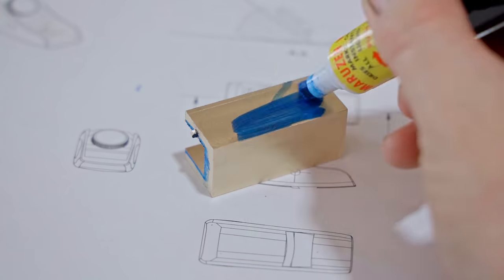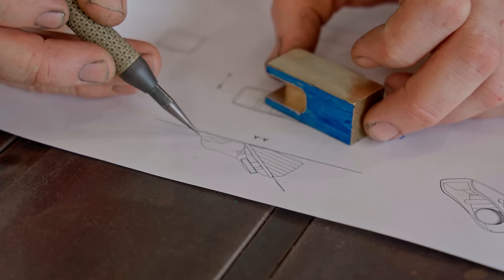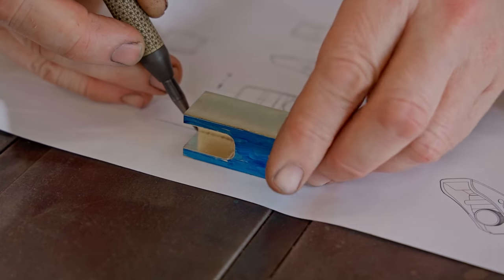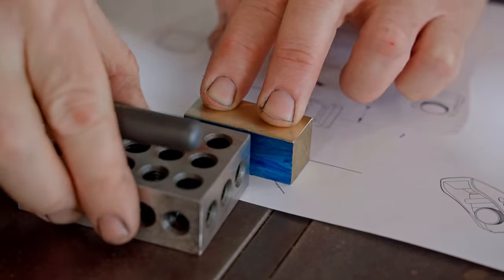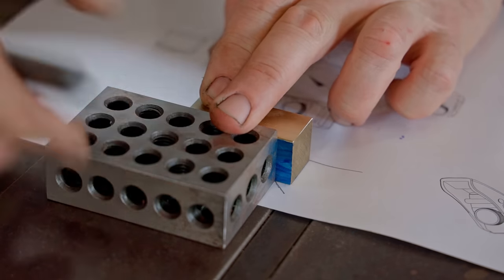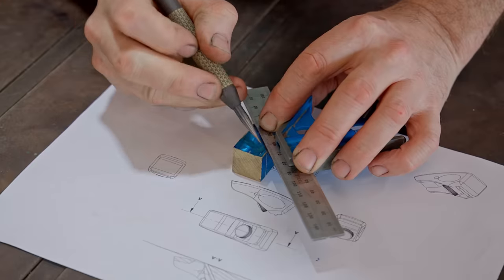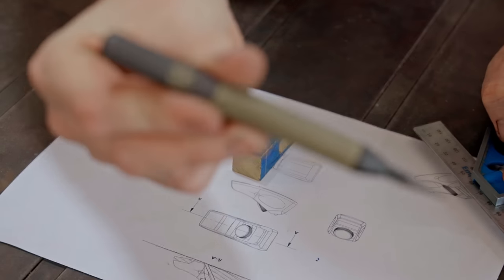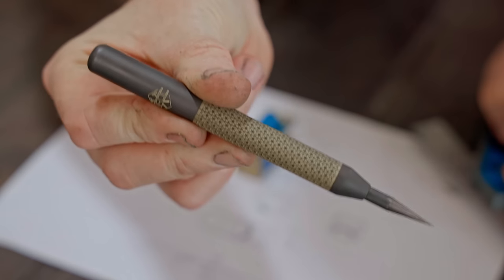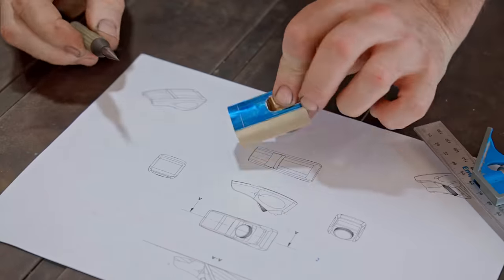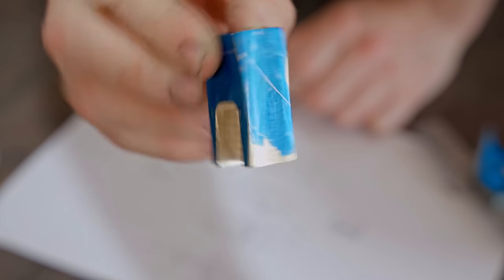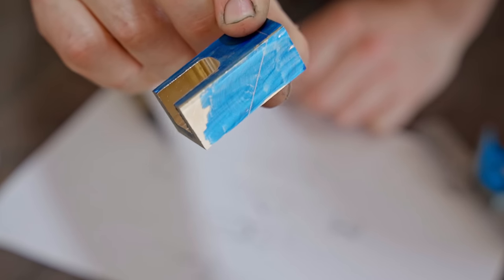Nothing needs to be super precise as long as it's pretty close, so I'll mark directly off the drawings. I also get to use my new scribe that my mate Corin makes. It's carbide tipped and it's honestly the best scribe that I've ever used. If you'd like to get one I'll put a link in the description. I don't get anything for it and I also paid for mine.